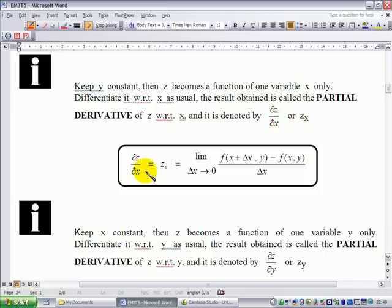So partial dz/dx is equal to the limit of the difference quotient. Consider f and you allow x to change while y is fixed. So f, and then you change x to x + Δx and y remains the same. Look at this difference and divide by the difference in x, Δx, and let the limit as Δx goes to zero. If this limit exists, then this is called partial dz/dx.